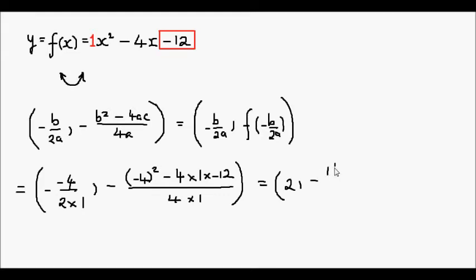Negative 4 squared is 16. Negative 4 times 1 times negative 12 is equal to positive 48, all over 4. And this works out then to be 2. And 16 plus 48 is equal to 64, divided by 4 is equal to 16. And that's a negative 16, to be precise.